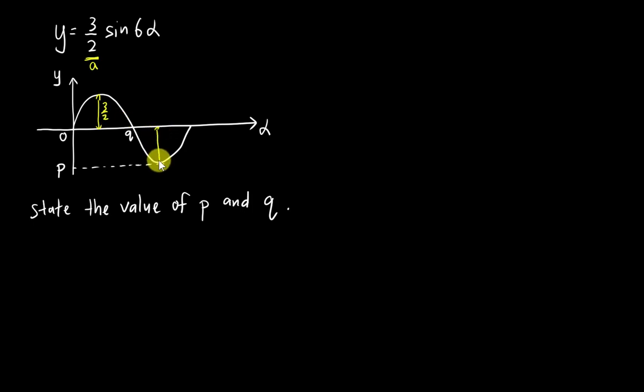Therefore, if this answer is 5, then the length here will be 5. So it's 3 over 2, so quite straightforward that you know p is equal to 3 over 2, nothing very special.